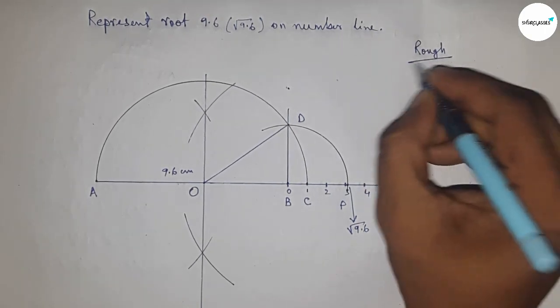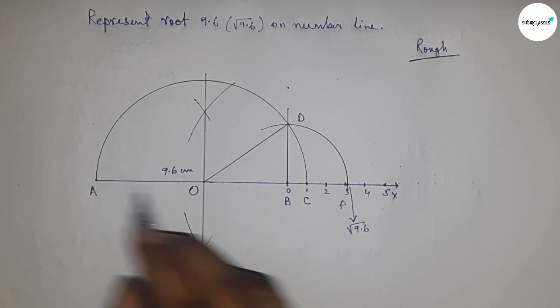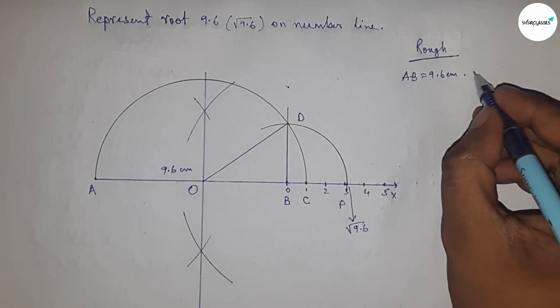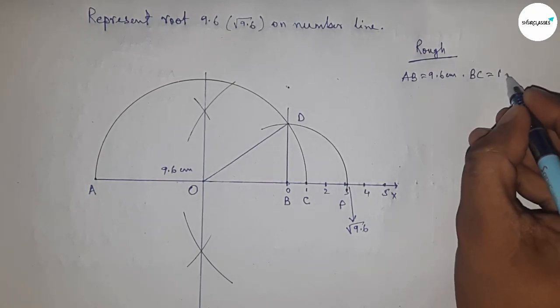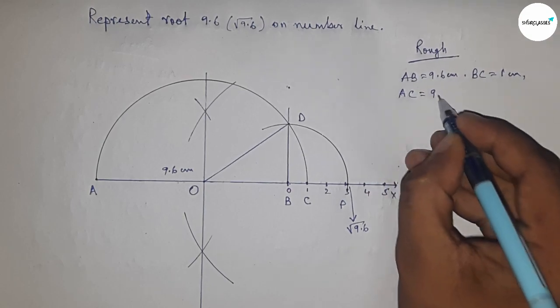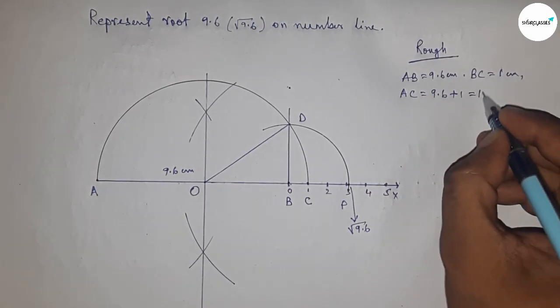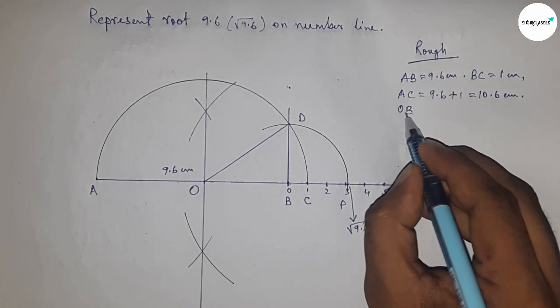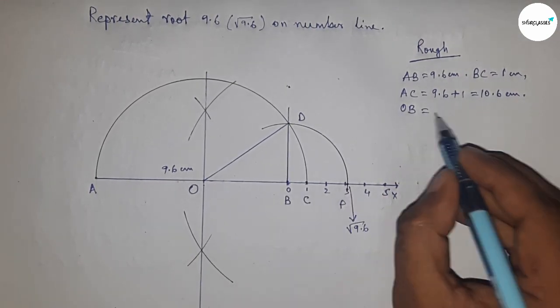Now let's discuss the calculations. Given AB equals 9.6 centimeters and BC equals 1 centimeter, we can write AC equals 9.6 plus 1, which is 10.6 centimeters.